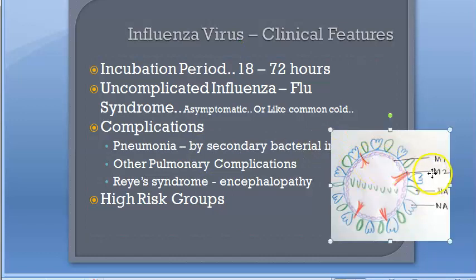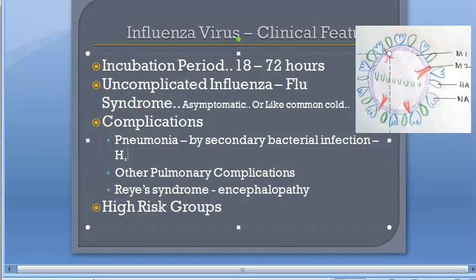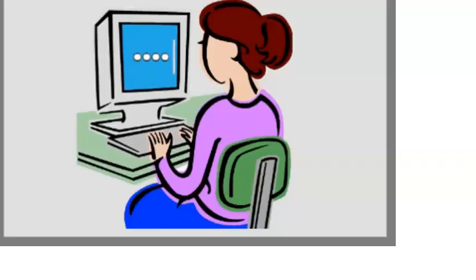An important clarification: influenza is caused by influenza virus — not Haemophilus influenzae. Haemophilus influenzae is a bacterium that actually causes meningitis. It was incorrectly named 'influenzae.' So remember: influenza virus causes influenza; Haemophilus influenzae is a bacterium that causes meningitis and was incorrectly named.